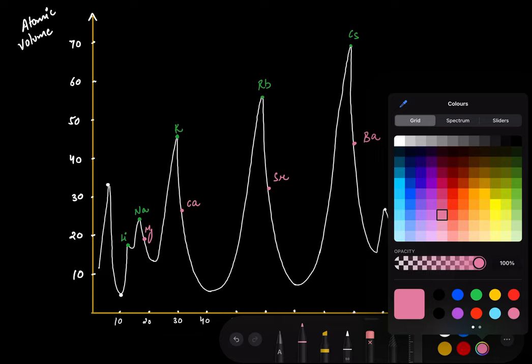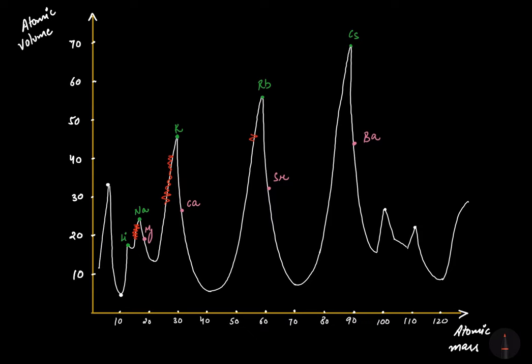The ascending curves are the upward slopes leading to each peak. I am marking the first, second, third, and fourth ascending curves so you can identify them clearly.